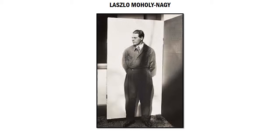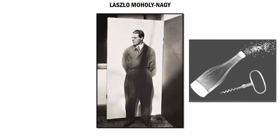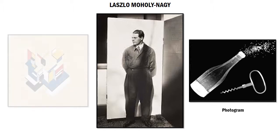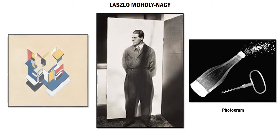The photogram, a form of photography involving the exposing of light-sensitive paper, interested Moholy-Nagy and is used in some of his most popular works. In his paintings, it is clear to see he had a relation to the artist Theo van Doesburg in his use of abstract shapes that create subtle gestures.